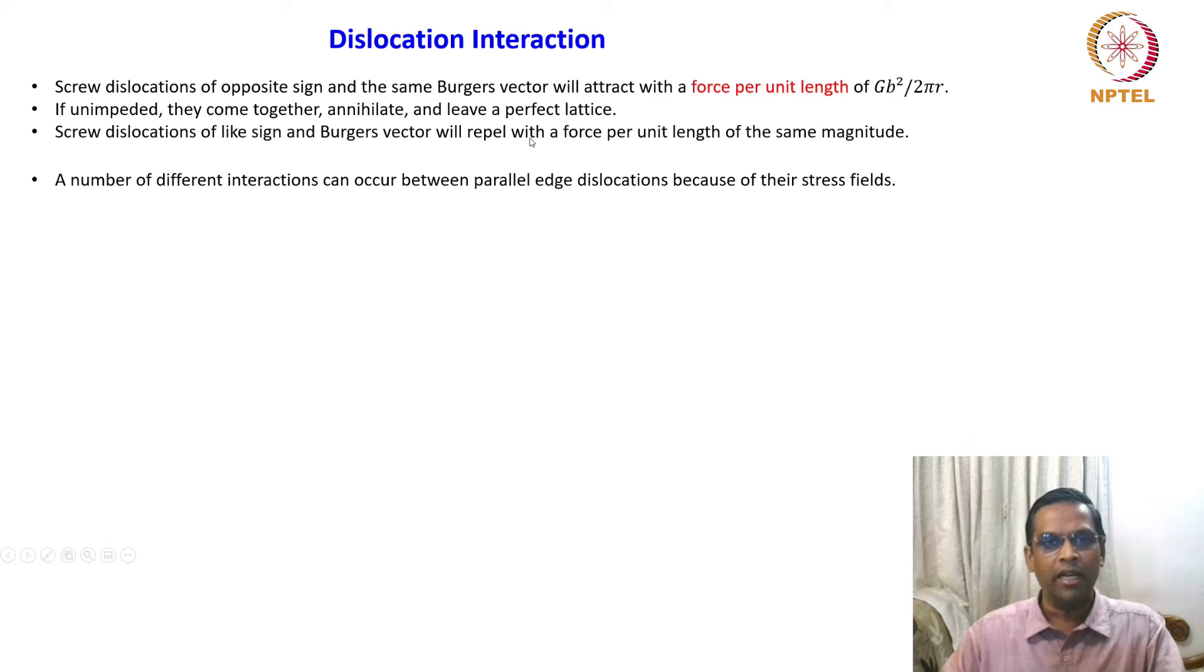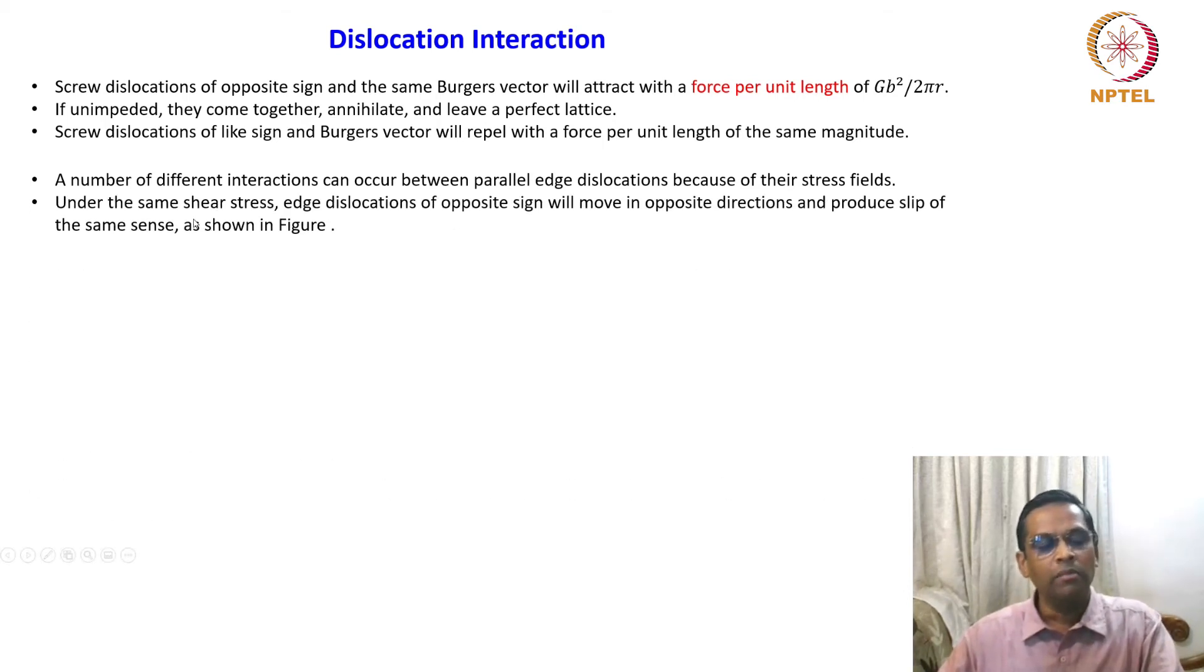These are all general guidelines, but with this background we can think of a number of different interactions that can occur between parallel edge dislocations because of their stress fields. We have to remember that having gone through all these details of the stress fields, we appreciate that the stress fields around edge dislocations are quite complex. If you recall, the upper half plane is subjected to hydrostatic compression, the bottom half is subjected to hydrostatic tension. Under the same shear stress, edge dislocations of opposite sign will move in opposite directions and produce slip of the same sense.